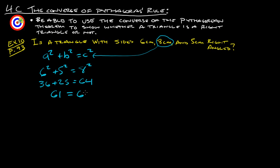61 does not equal 64, so therefore it is not a right triangle.